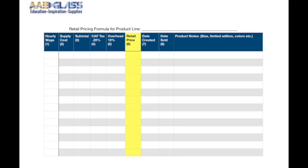Let's take a look at the cost analysis sheet. The first column is your hourly wage — when you start out, take the minimum wage where you live and multiply it by three. If you are selling in a different state, find out the minimum wage there and multiply by three. The second column is your supply cost. The third column is the subtotal of hourly wage and supply cost.